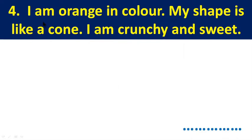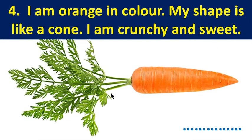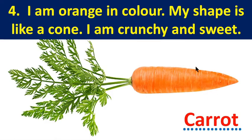Number four: I am orange in color. My shape is like a cone. I am crunchy and sweet to taste. So this is carrot — its color is orange and its shape is like a cone.